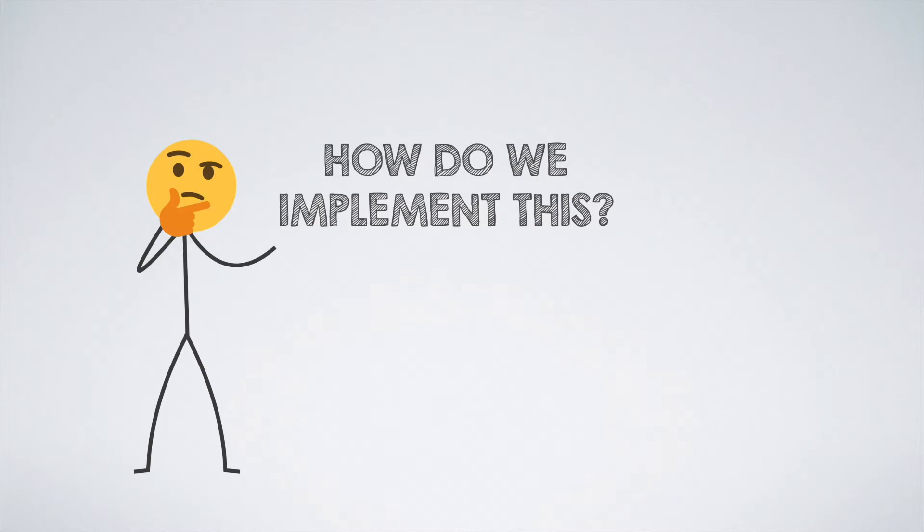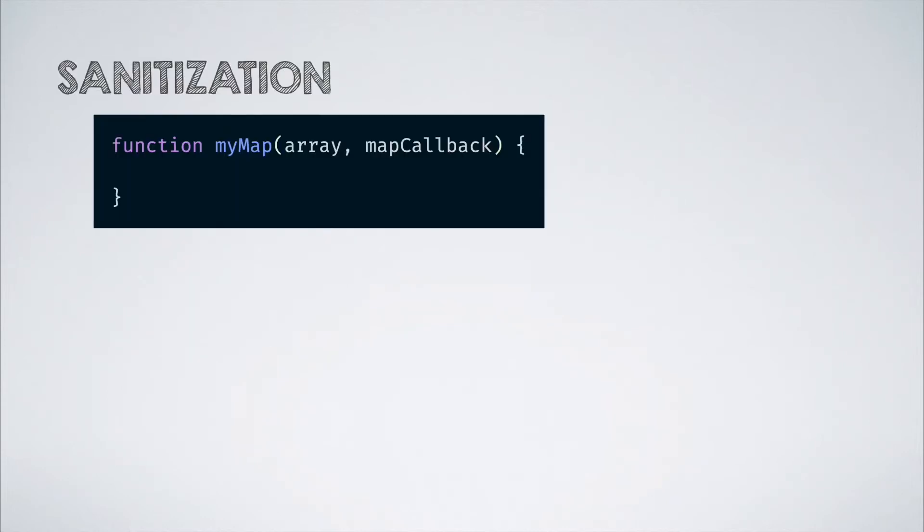So how do we start to implement this? Let us give it a try. Let's call this function as myMap. It will accept an array and a modifier function as its two arguments.